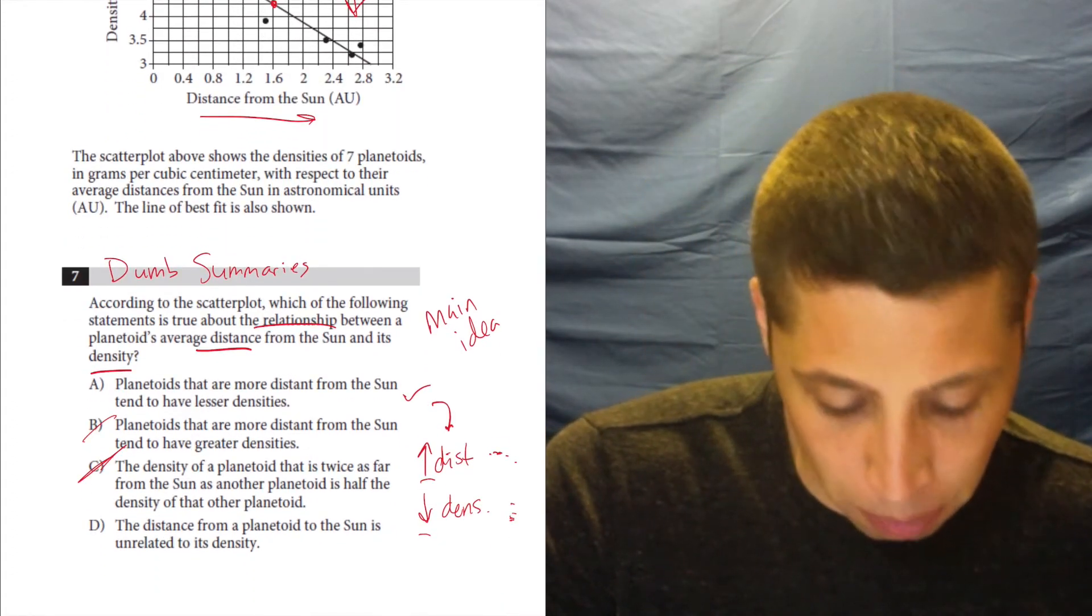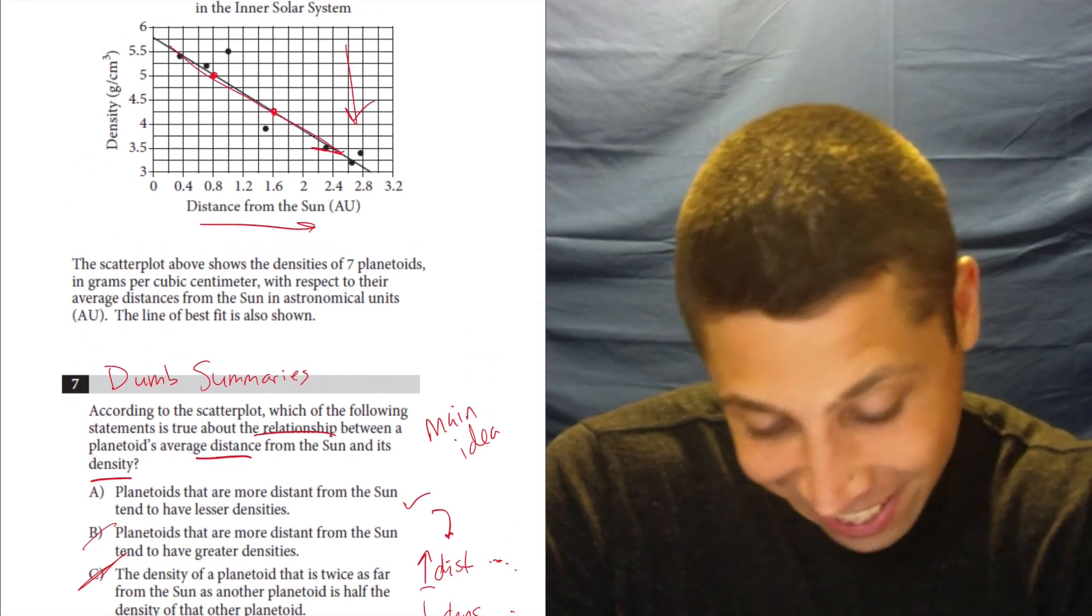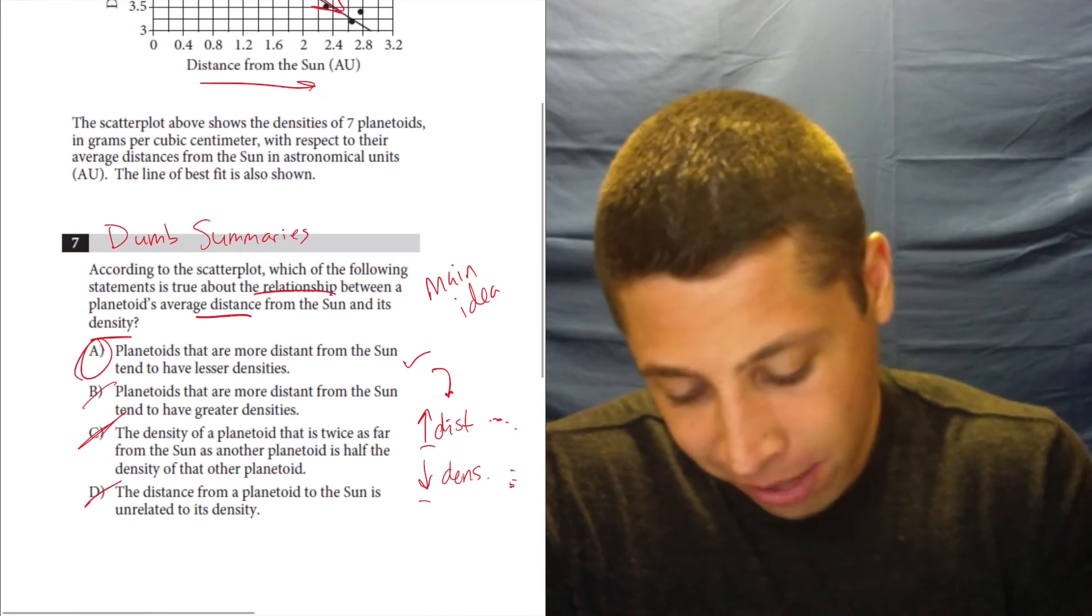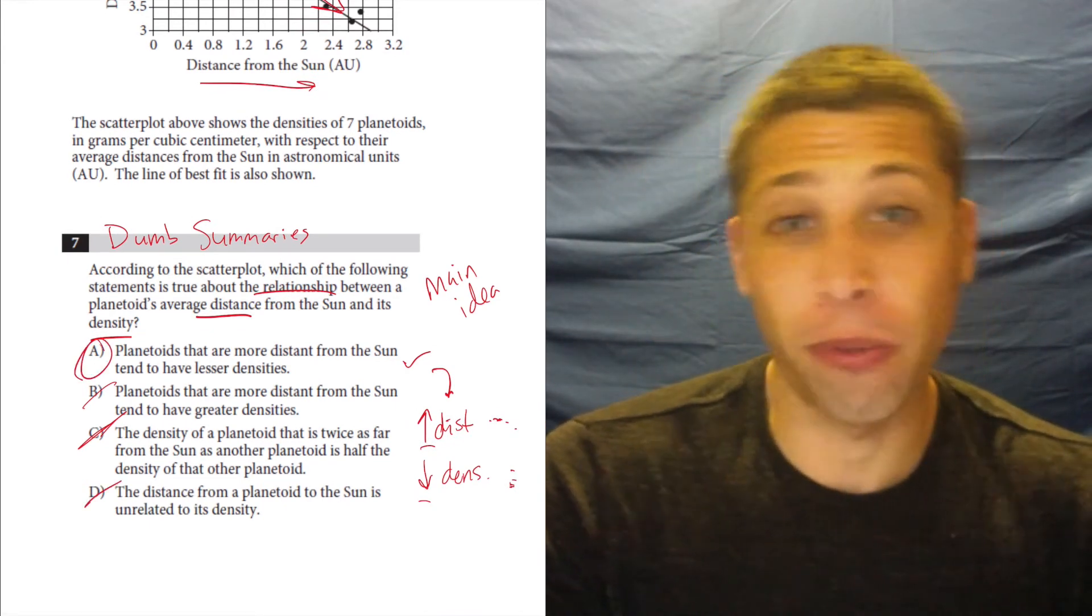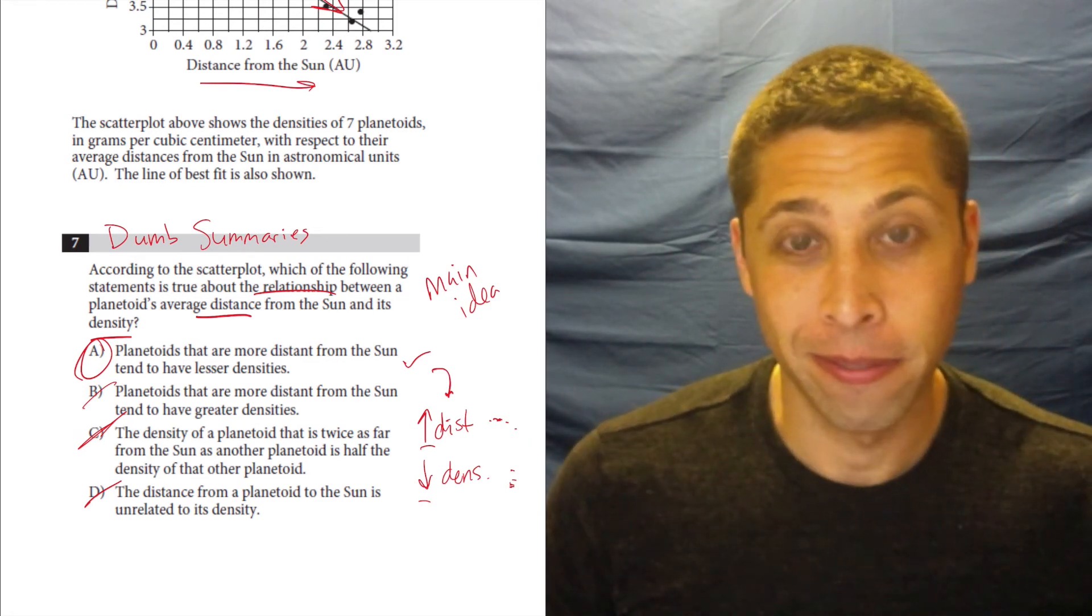The distance from a planetoid to the sun is unrelated to its density. No, there's a big line that shows you that it's related, that there's a relationship. So yeah, A is the answer. You can't get this wrong, right? You're just literally reading the graph and saying, does a line go up or down? That's it.